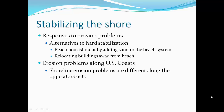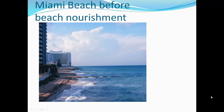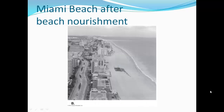Shoreline erosion problems are different along opposite coasts of the U.S. Miami Beach before beach nourishment — photographed around 1976 — had groins attempting to trap sand, but they were not particularly effective and the beach was being lost. After beach nourishment, where sand is pumped from offshore back onto the beach, the beaches were considerably widened.